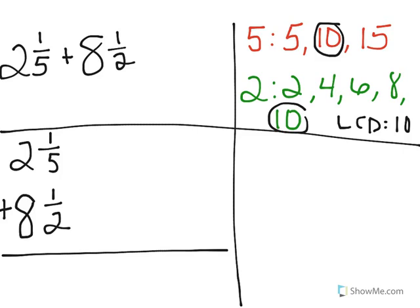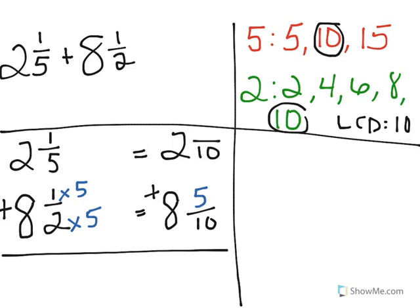Okay, so we have 2 and 1 fifth plus 8 and 1 half. And we're going to rewrite our problem using our least common denominator, which is 10. So we'll move over our denominator, which is the least common denominator of 10, and our sign and our whole numbers. So now I need to go ahead and figure out what my numerators are going to be. So I'm going to start down here at the bottom. And to get 10, I had to multiply 2 times 5. So I'm also going to multiply my numerator by 5. 1 times 5 is 5. And going up here to the top, I had to multiply 5 times 2 to get 10. And so I'm also going to multiply by 2. And 1 times 2 is 2.